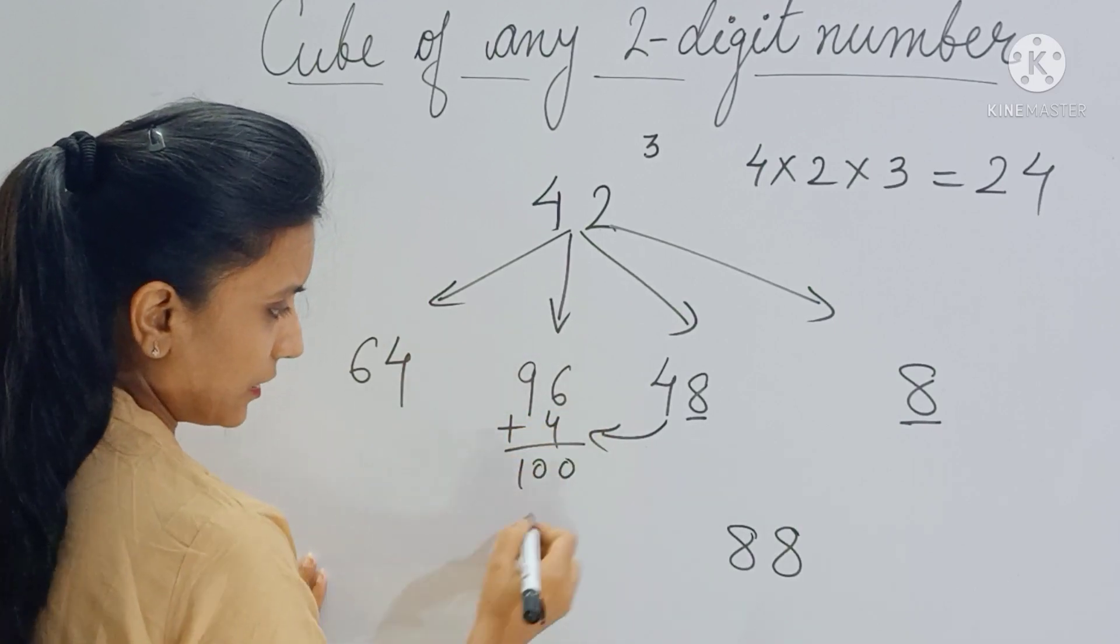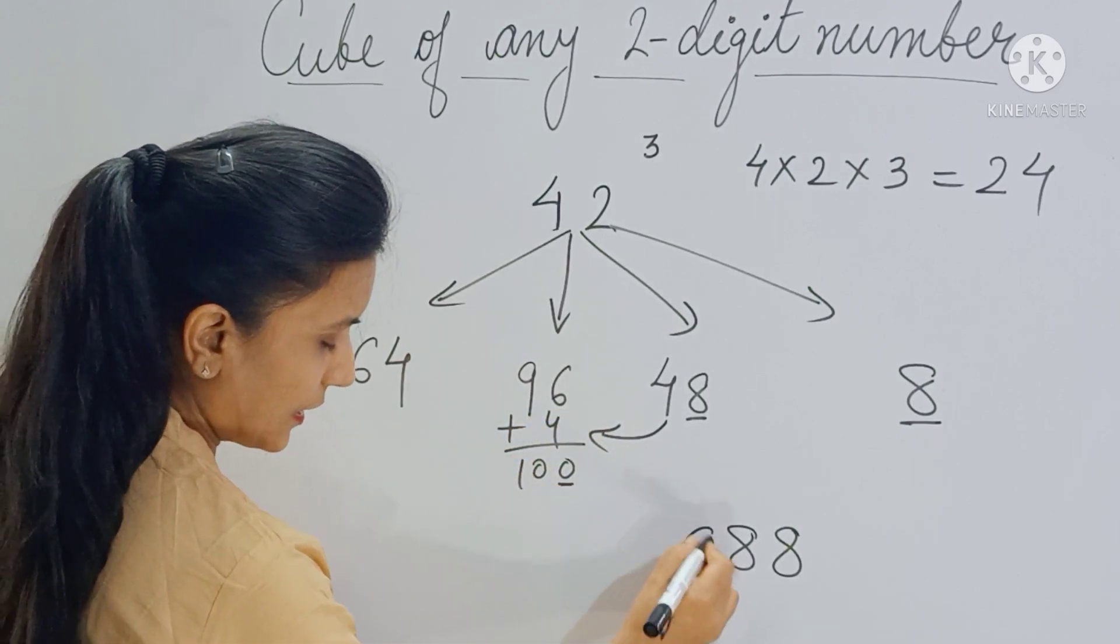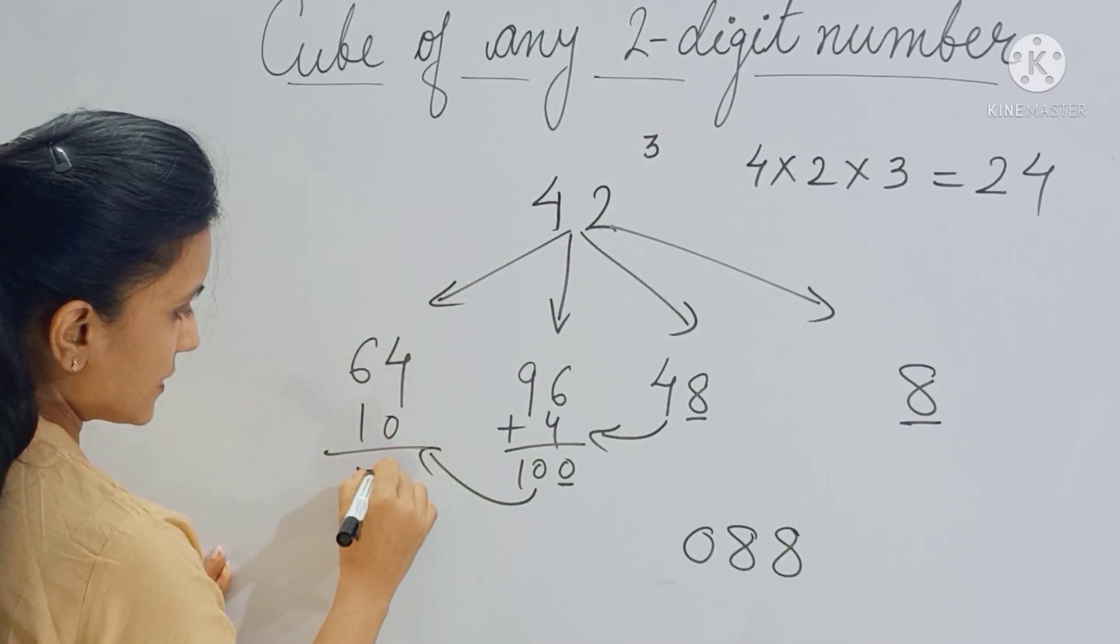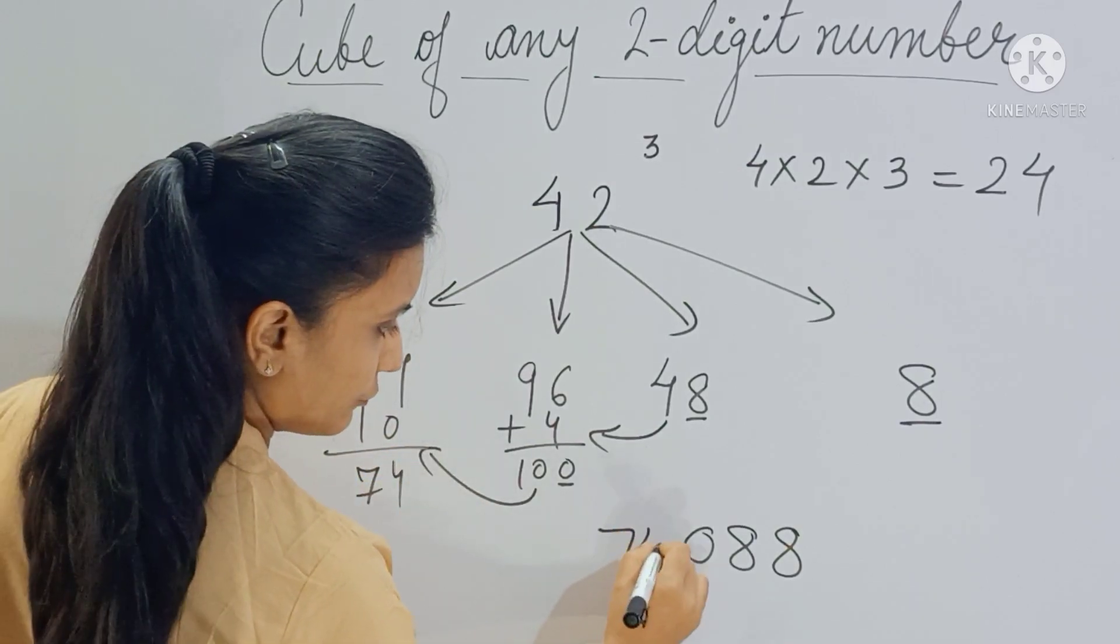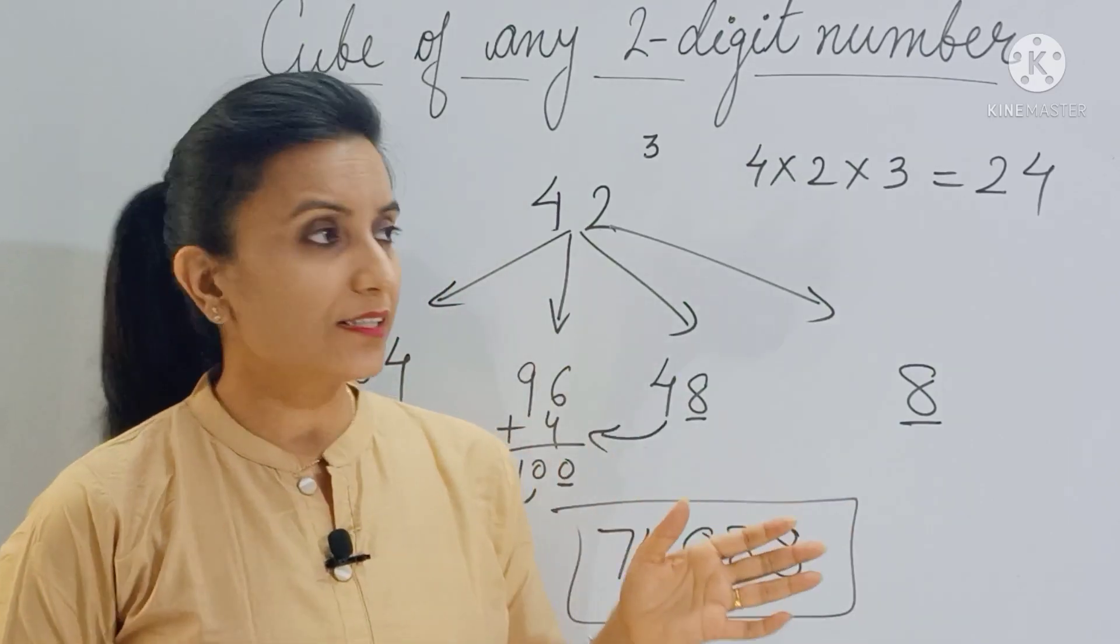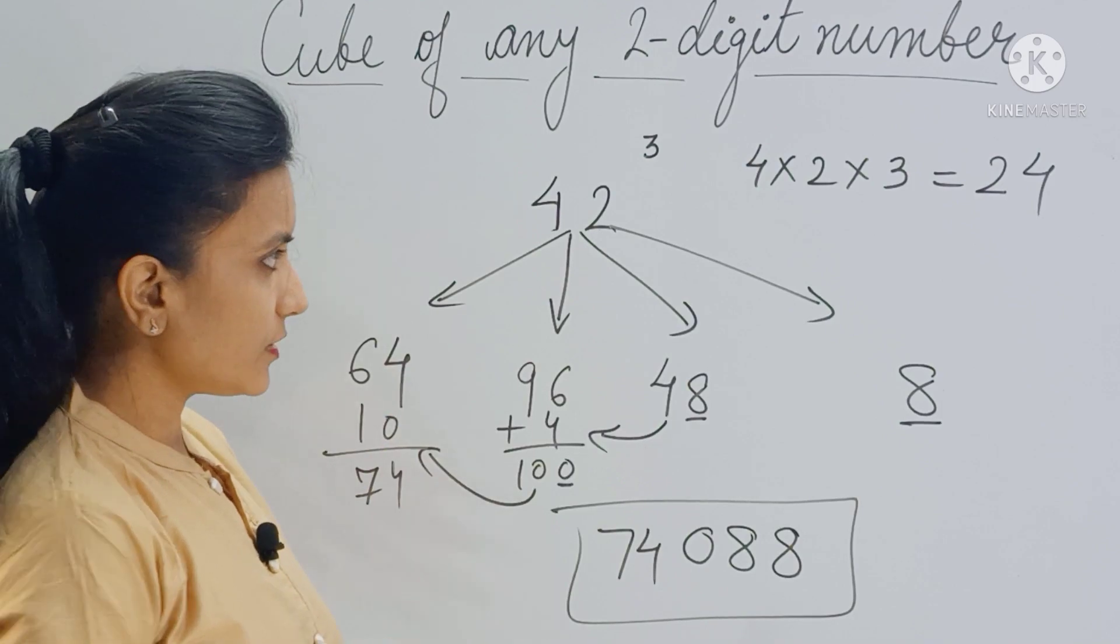Now copy this 0 here, and this 10 becomes the carry forward, so add 10 here. You get 74. So 74088 is your answer. You can see that this trick is very simple.